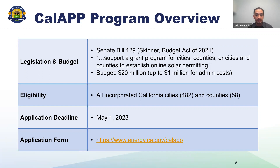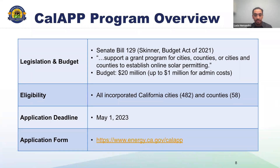Let's start with a high-level overview of the Cal-App program. Cal-App is a grant program developed and administered at the Energy Commission, established with funding from the 2021 Budget Act. This bill provided $20 million with a mandate to support a grant program for cities and counties to establish online solar permitting. Funding is available to all incorporated cities and counties across the state. The deadline to apply is May 1, 2023, while funding lasts.